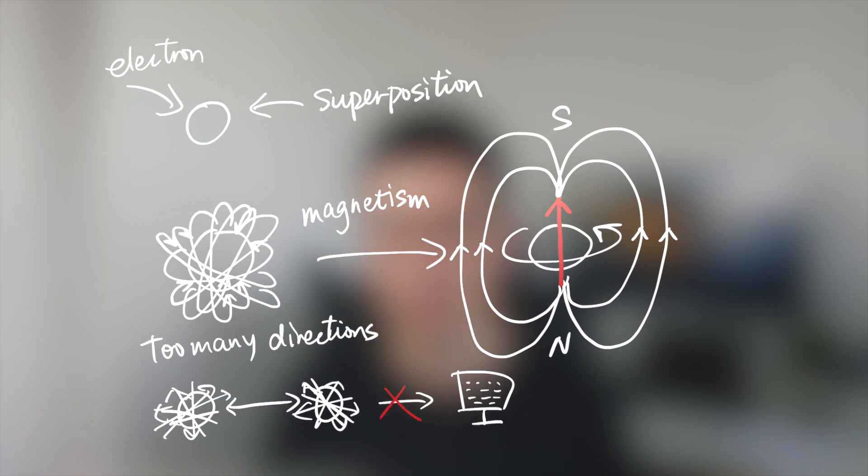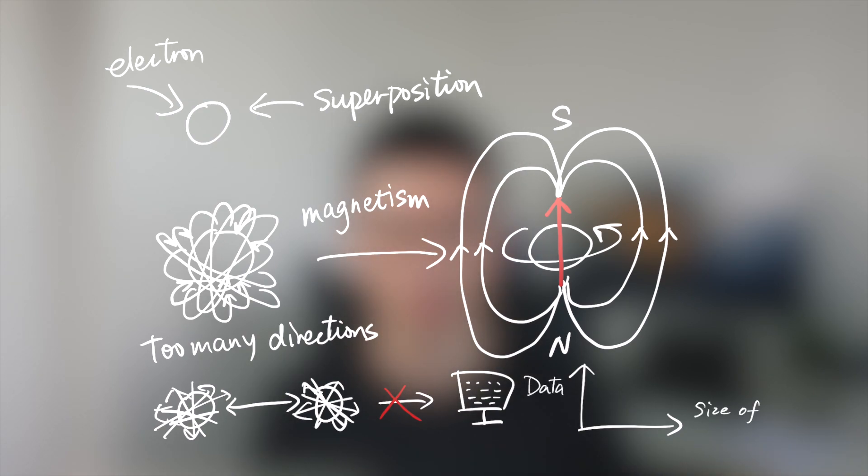Storing all spin states is impossible because the data grows exponentially when we simulate bigger molecules — it's far beyond what even the most powerful supercomputers in the world can handle. For now, we can only use classical computers to do material simulation because it's the only choice we have. It's not good, but it's the only choice. One drawback: if we want to simulate a large molecule, all you can do is wait, because it will take weeks or months to finish the calculation.